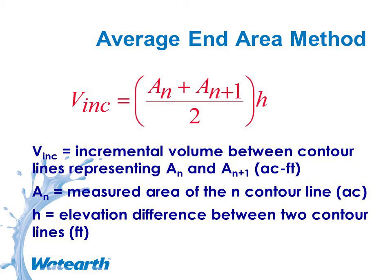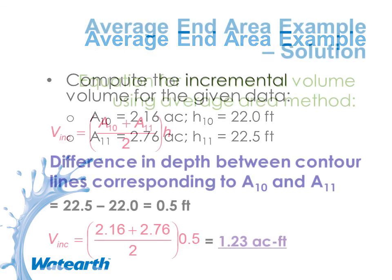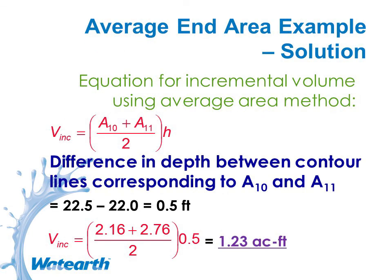The average end area method takes the incremental volume as an average of the area between two slices times the height differential between the two. For example, if the area at elevation 10 is 2.16 acres and the area at elevation 11 is 2.76 acres, you take an average of 2.46 acres times 0.5 feet, giving 1.23 acre-feet.